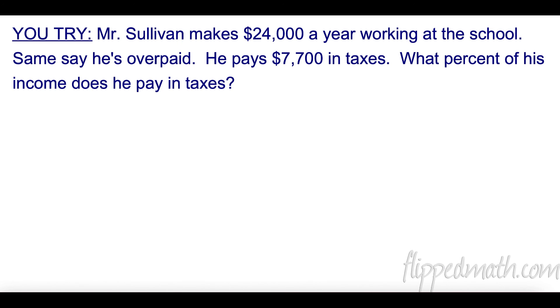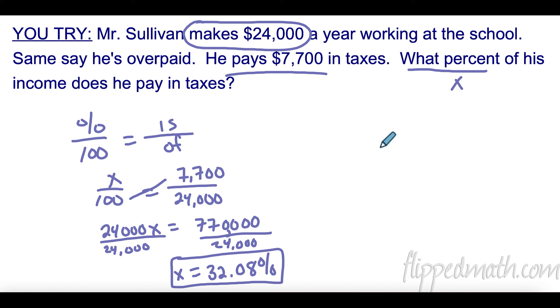Pause the video again and try this one. Do as much as you can - set up at least the 'is' over 'of' and percent over 100. Here's the problem: Mr. Sullivan makes $24,000 a year working at the school. Some say he's overpaid - Mr. Brust probably is one of them. He pays $7,700 in taxes. What percent of his income does he pay in taxes?